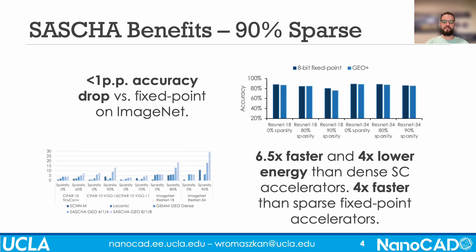At 90% sparsity, SACHA can be within one percentage point of fixed point accuracy on ImageNet, with over six times lower latency and four times lower energy than dense SC accelerators, and four times lower latency than fixed point ones.